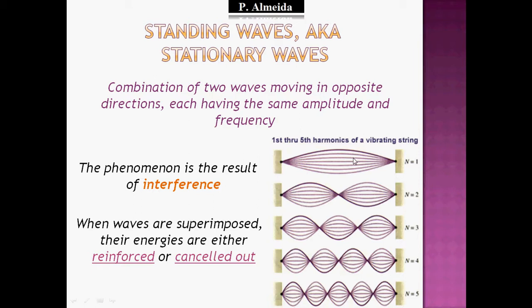It always looks like this shape or that one, depending on the number of full amplitudes — what I'll call antinodes — that you can see. There is an actual name for it: a standing or stationary wave, and that is where the name comes from.